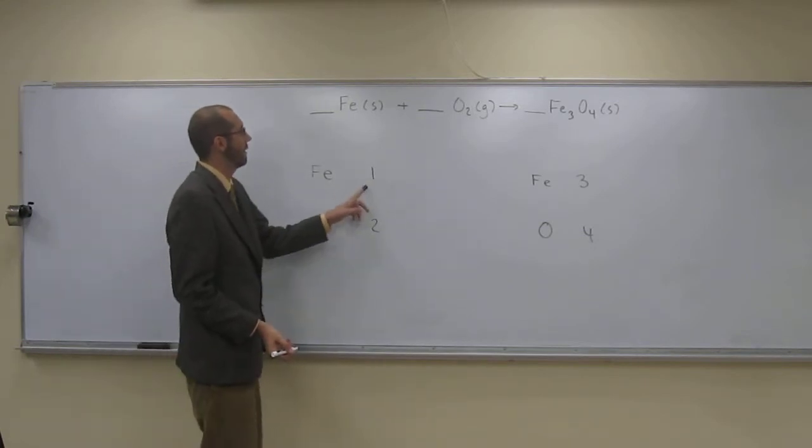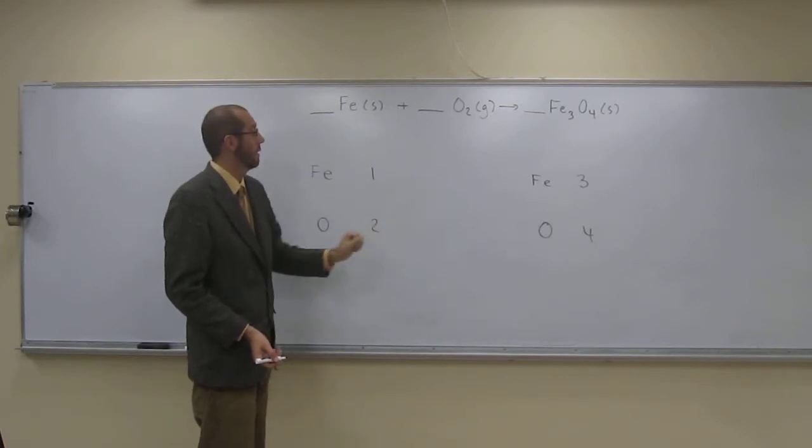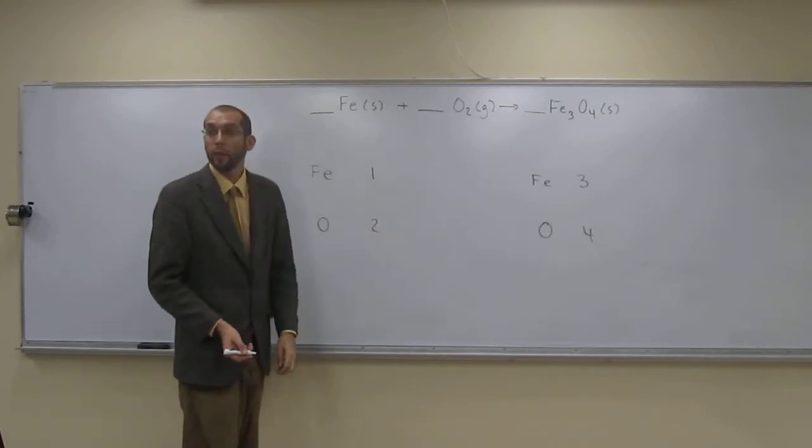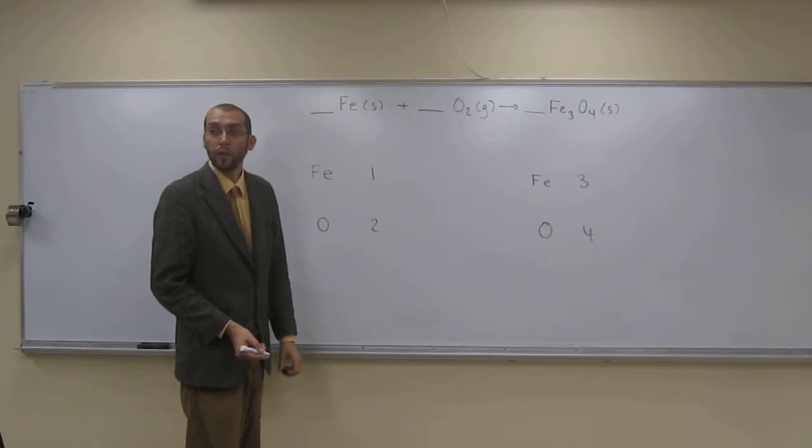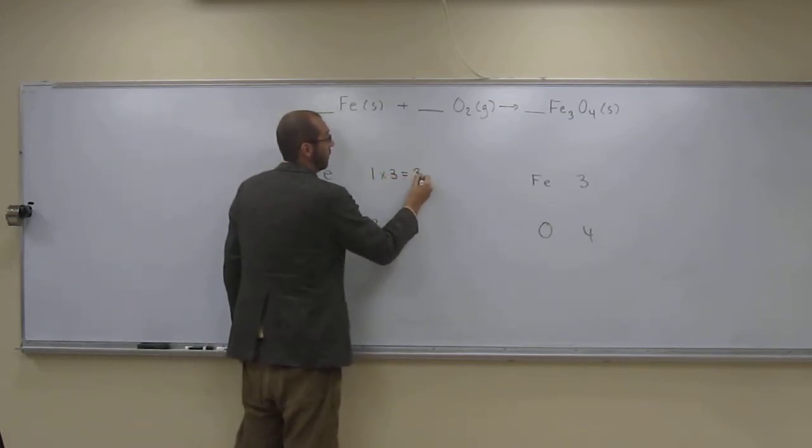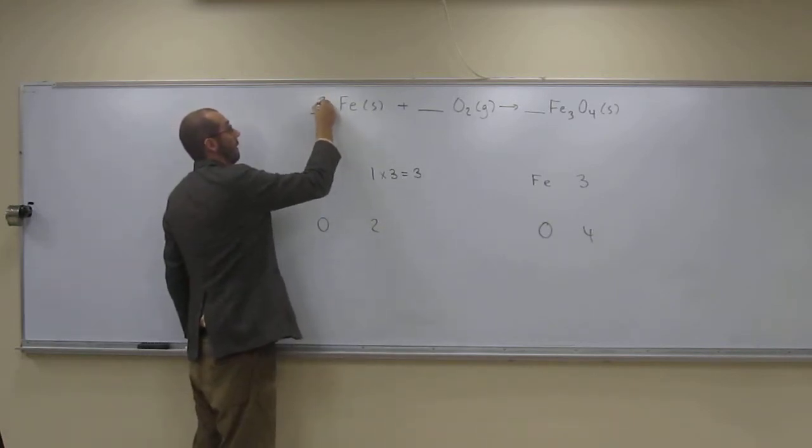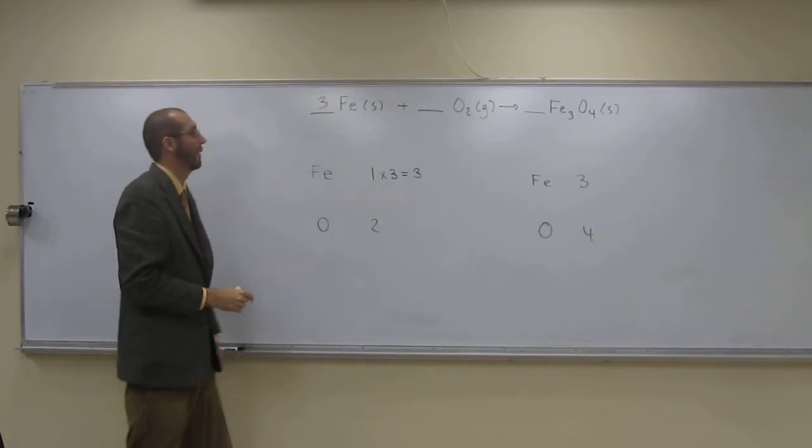So, well, what do we have to do? So, there's only irons over here, right? So, what do we have to do to this iron to make it three? Yeah, just multiply it by three, that equals three, so where are we going to put that three? On the coefficient. Very good, at the coefficient, very good, okay?